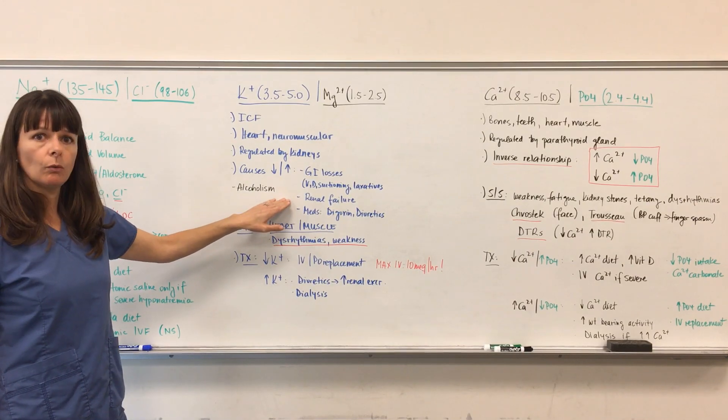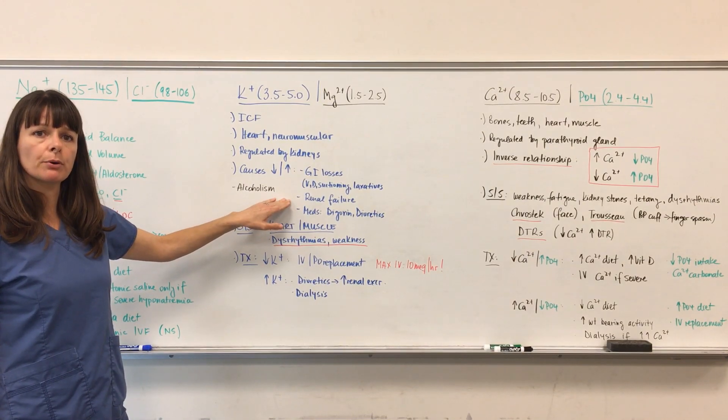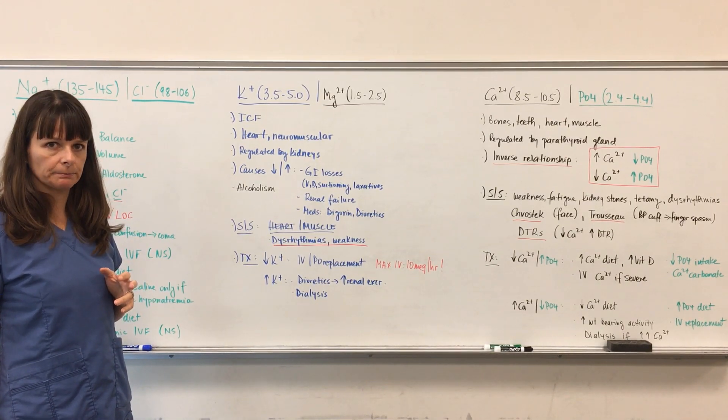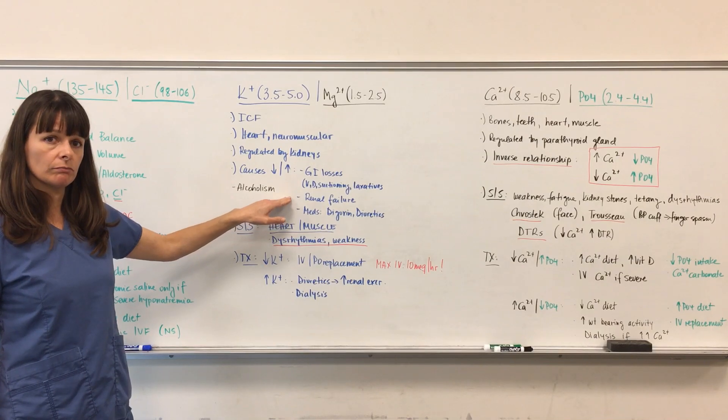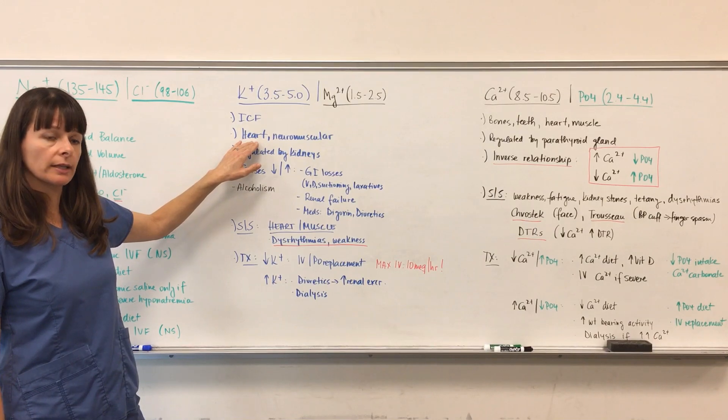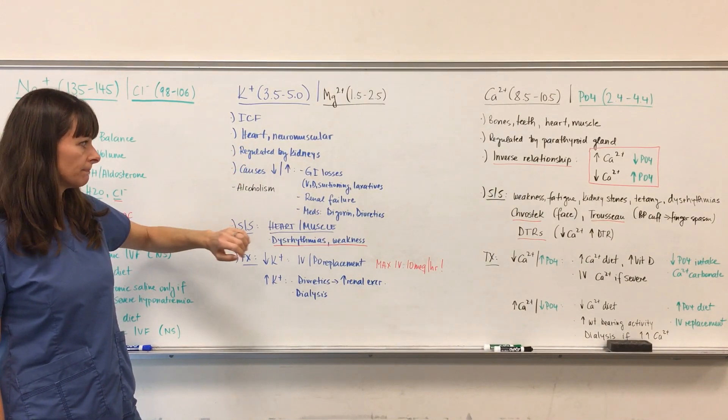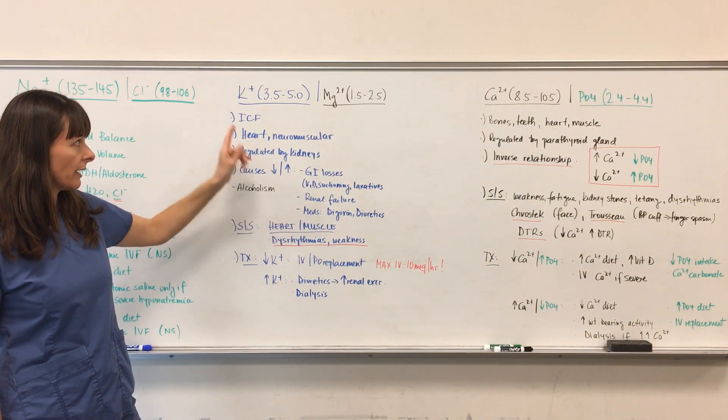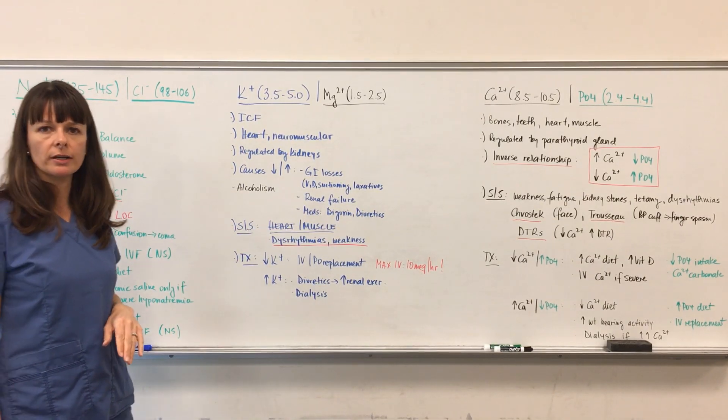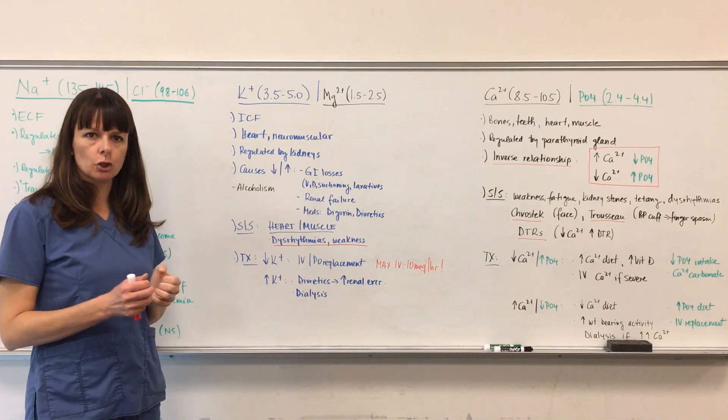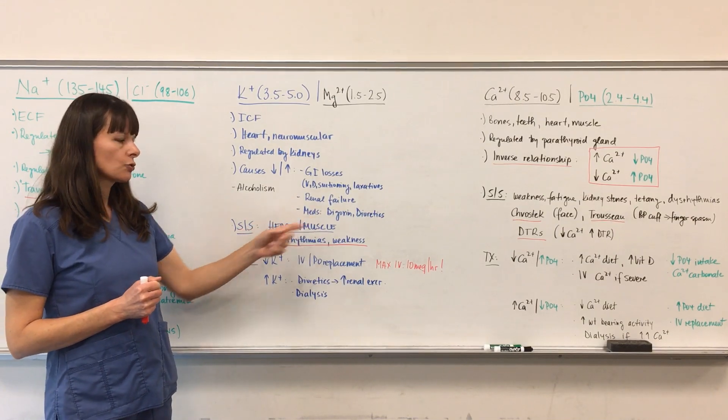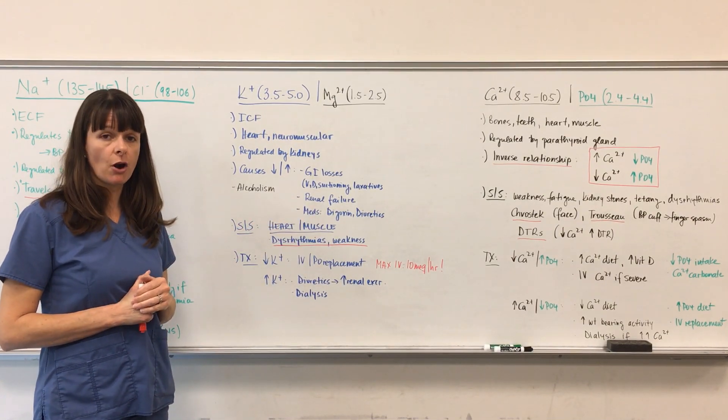Renal failure will definitely lead to hyperkalemia because the kidneys are unable to excrete the potassium, which can be very bad because increased potassium can affect the heart and therefore lead to dysrhythmias. Medications that can affect potassium include digoxin. Digoxin is a cardiac glycoside that helps strengthen the contraction of the heartbeat and is usually used for patients with congestive heart failure.